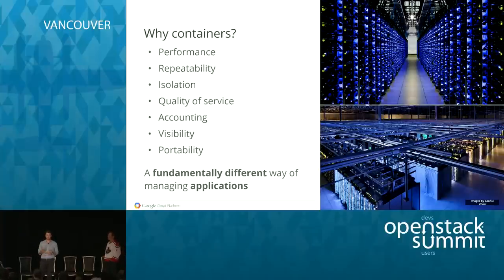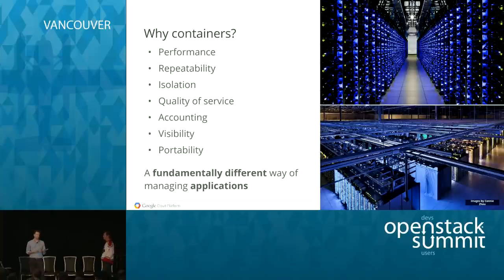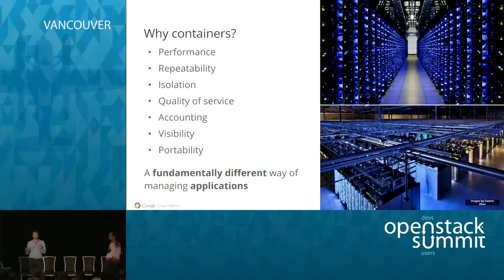One of the most important features of containers is portability — being able to take code that you wrote, package it into a container image, and move it between different environments, whether that's an OpenStack environment on premises, or a cloud provider like Amazon, Google Cloud Platform, or DigitalOcean. Being able to move that same code without worrying about what specific infrastructure you're running on is really important. Things change and people are migrating to cloud, or moving things back on premises for performance or security reasons.